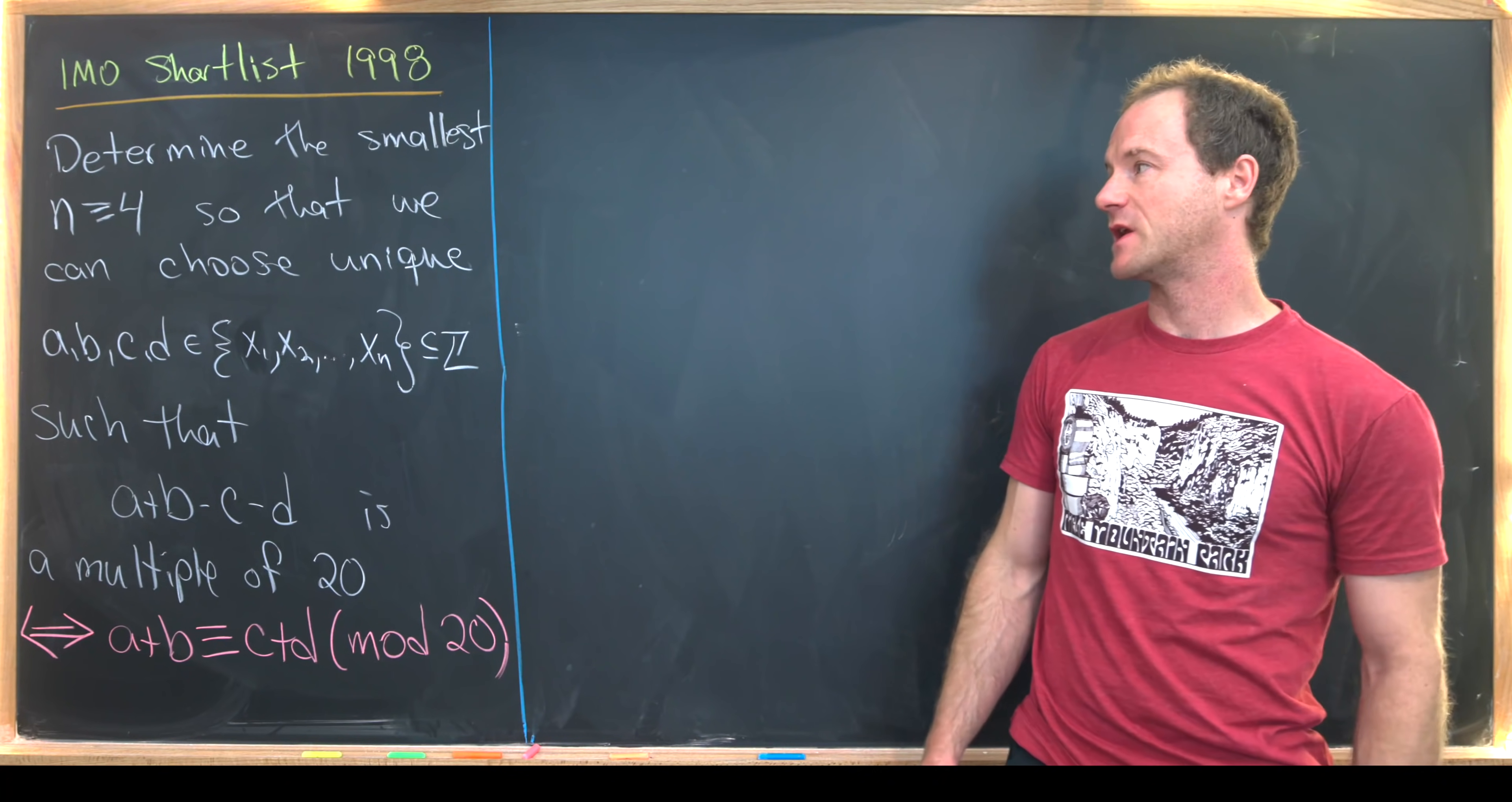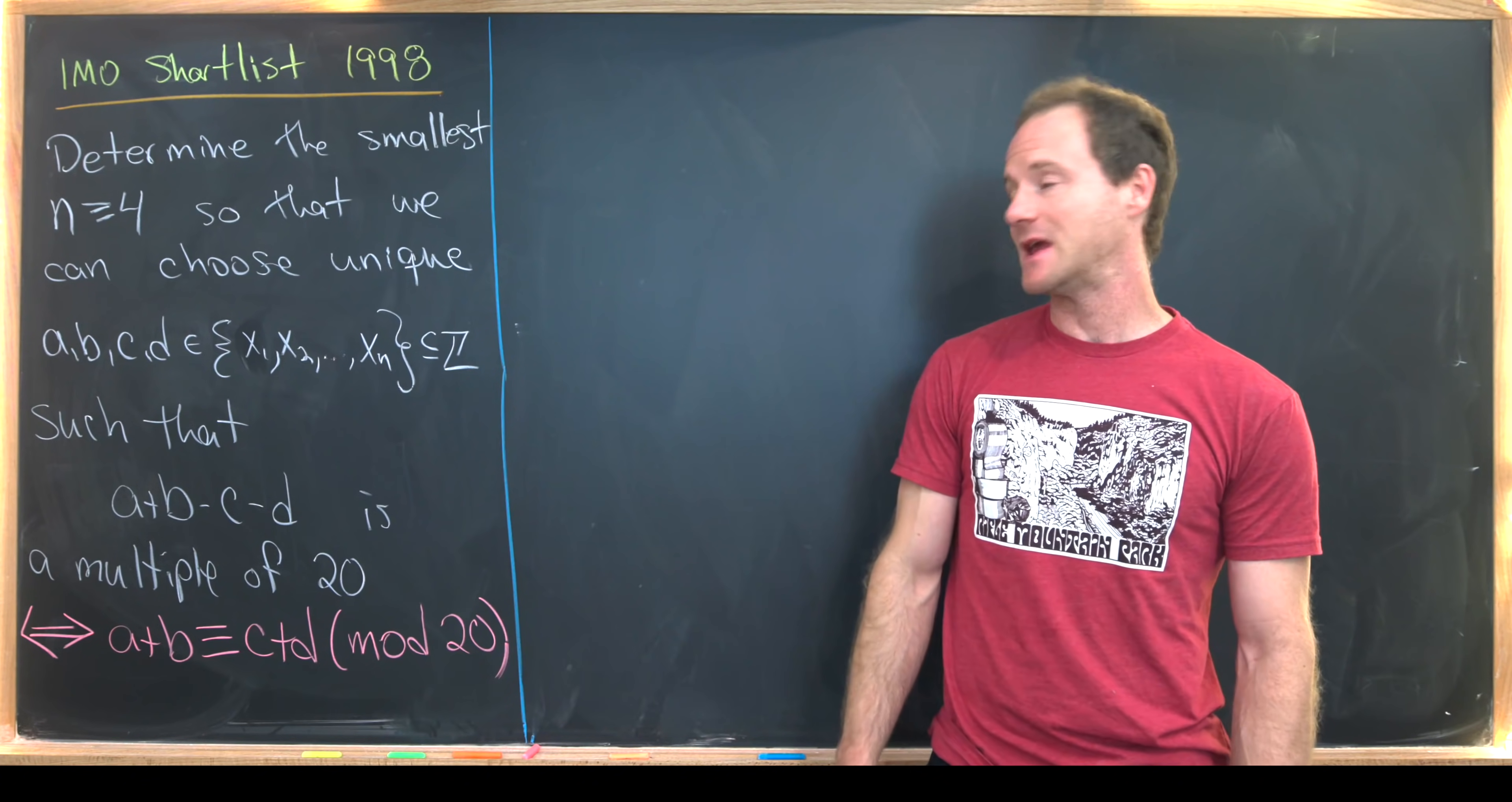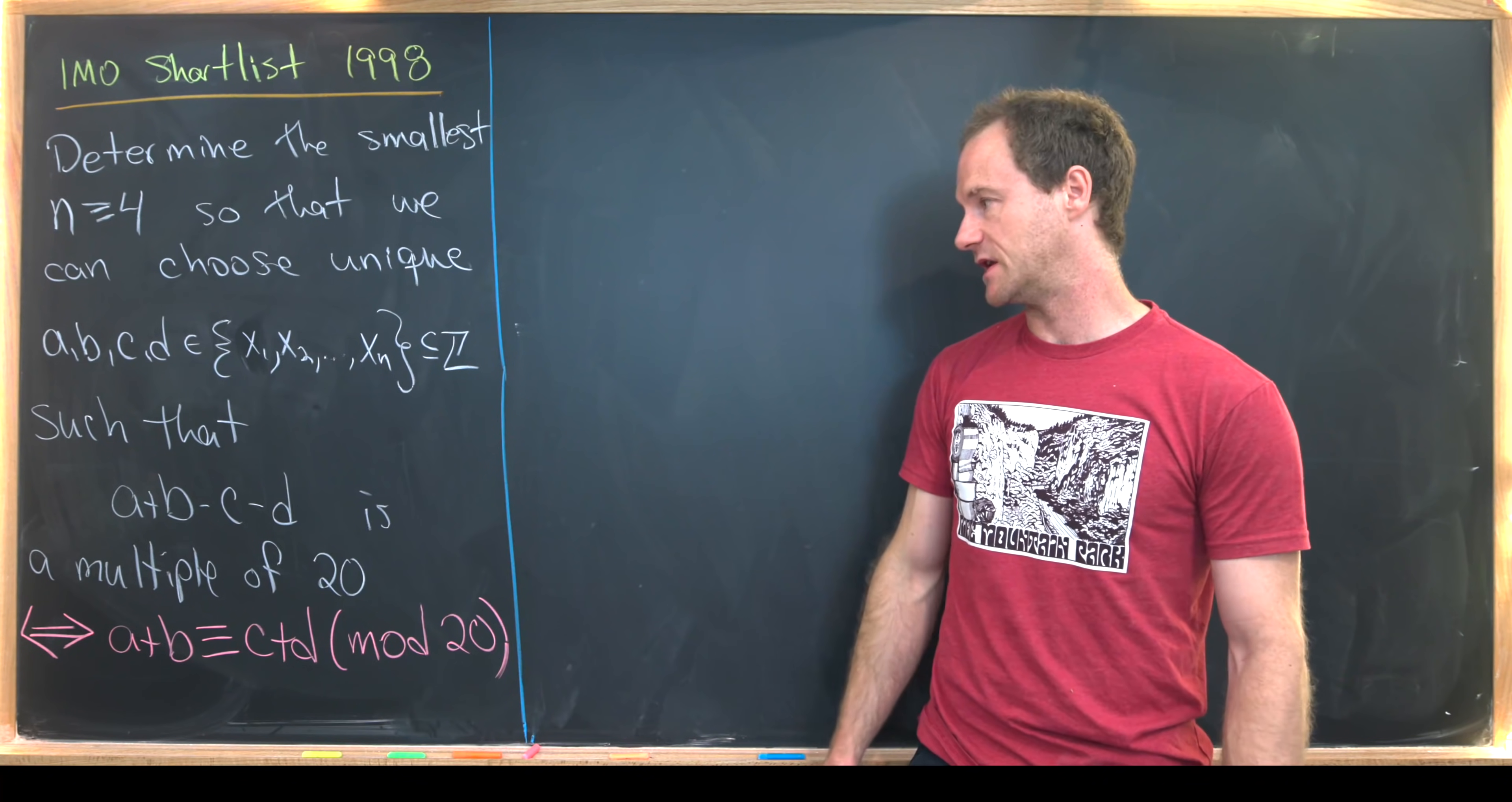We want to determine the smallest natural number n, which is bigger than or equal to four, so that we can choose unique numbers a, b, c, d from the set of n integers. So I'll just say that set is x1, x2, all the way up to xn, and that's like any set of n integers.